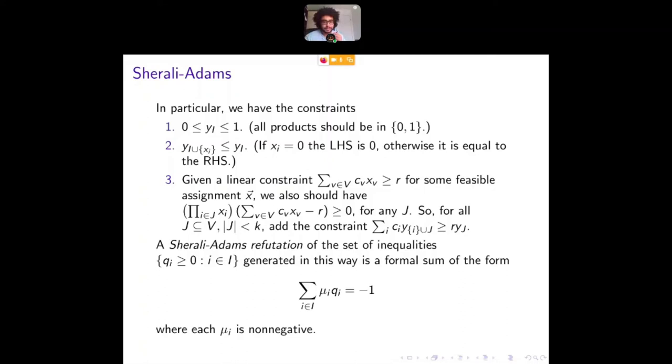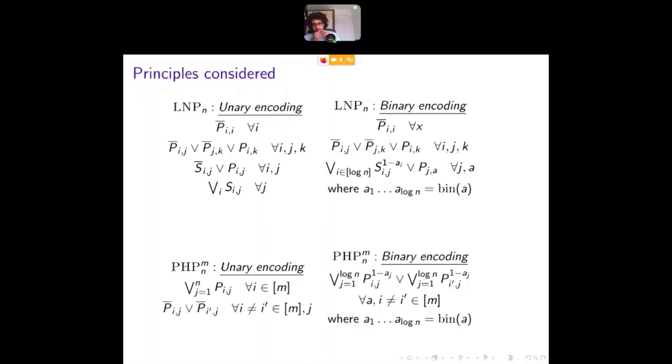So these are the principles that we considered. These are the principles that we considered in the paper, the pigeonhole principle we've met. The least number principle is a similar idea. It claims that there is a total ordering of N elements, such that for any of those N elements, you can find something smaller. So this is a contradiction and it's well studied in the literature.